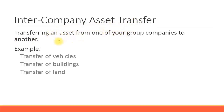Now let's look at intercompany asset transfers — that is transferring an asset from one of your group companies to another. Remember, all intercompany or cross-company code transactions must lie within the same chart of accounts group or controlling area. Examples include transferring a vehicle from your head office to your branch, transferring vehicles between sister companies, transfer of buildings when moving into a head office, or giving land to a sister company.